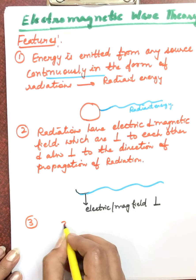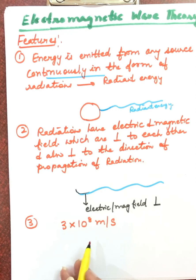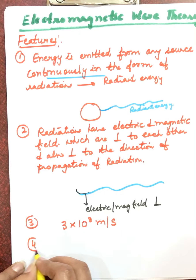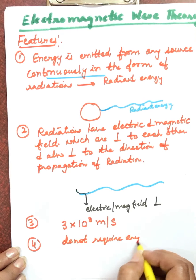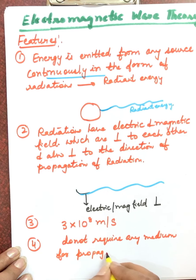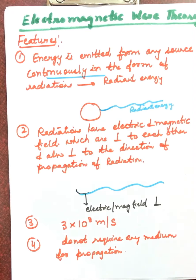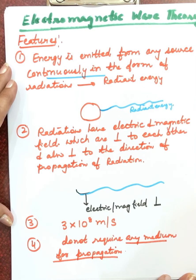The third point is that all these radiations travel with the same velocity, equal to the velocity of light: 3 × 10⁸ meters per second. All electromagnetic waves travel at this velocity. The fourth point is that they do not require any medium for propagation. They can even pass through vacuum. The rays coming from the sun can reach the earth through space without requiring any medium.